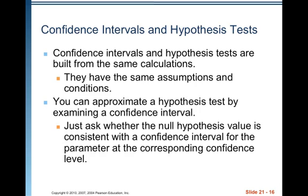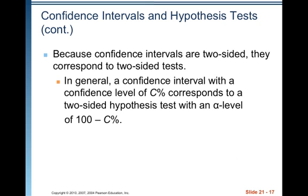Confidence intervals and hypothesis tests are built from the same calculations — they have the same assumptions and conditions. You can approximate a hypothesis test by examining a confidence interval: just ask whether the null hypothesis value is consistent with a confidence interval for the parameter at the corresponding confidence level. Because confidence intervals are two-sided, they correspond to two-sided tests. A confidence interval with a confidence level of C% corresponds to a two-sided hypothesis test with an alpha level of (100 − C)%. So 95% confidence corresponds to a 5% alpha level.